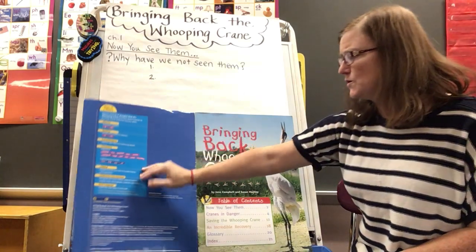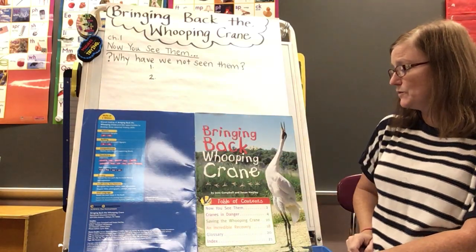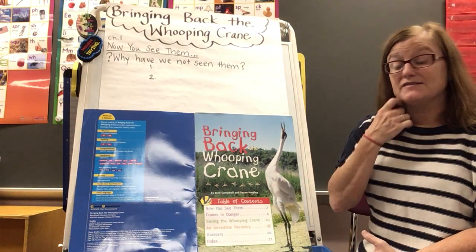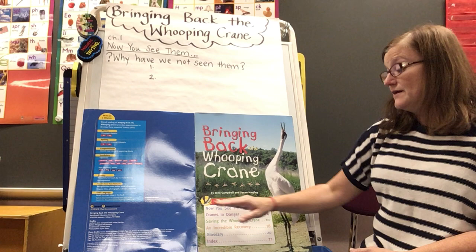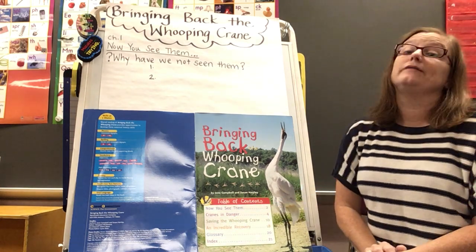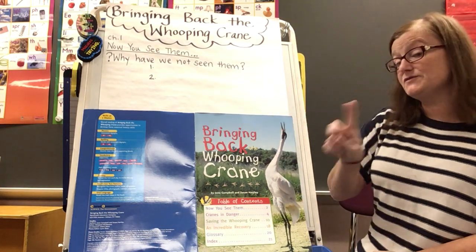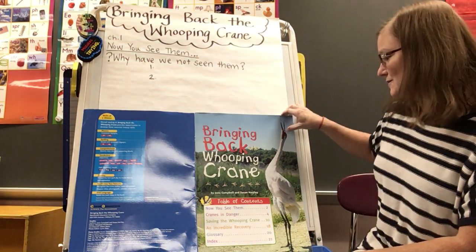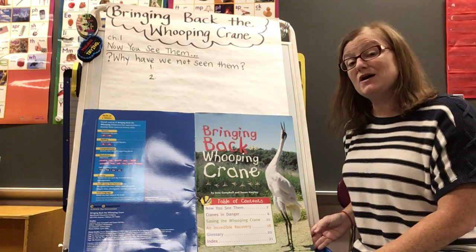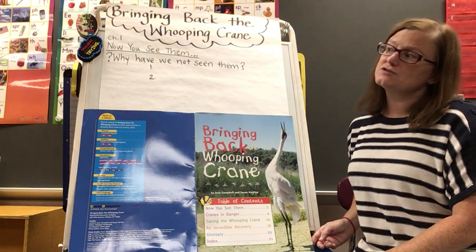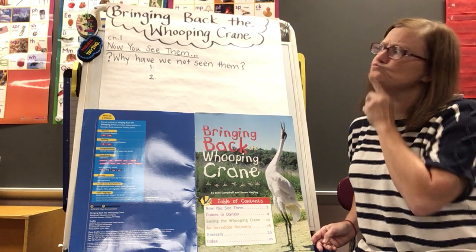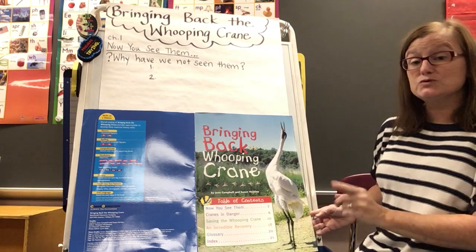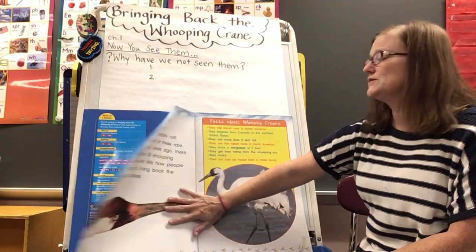As I open the story, here's my title page: 'Bringing Back the Whooping Crane.' I want you to look at this — it's called a table of contents, and the table of contents tells you the name of each chapter and the page it starts on. You can also figure out what the main point is by reading each chapter name. This is also called a nonfiction story — and a nonfiction story is a story that is true, it is facts.